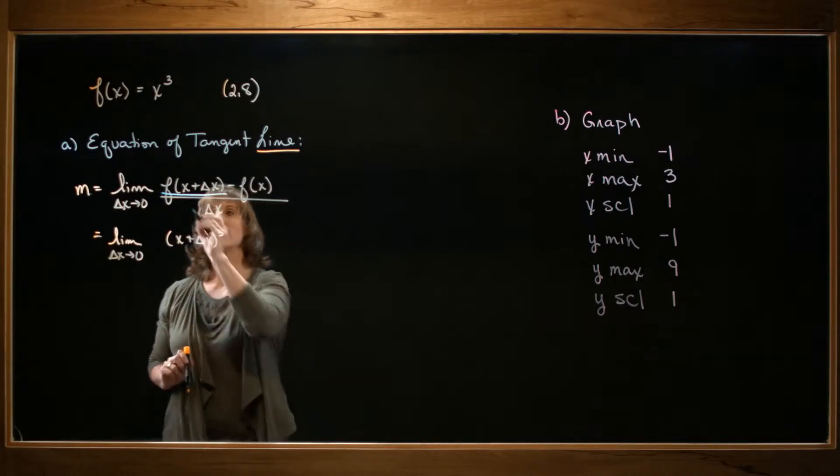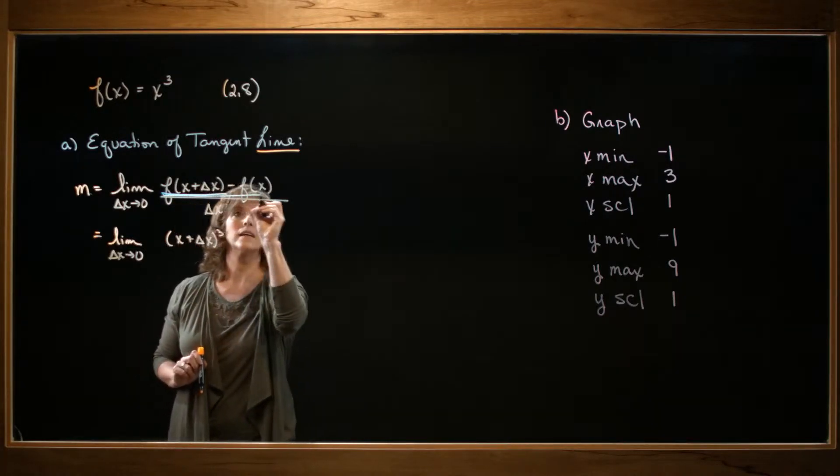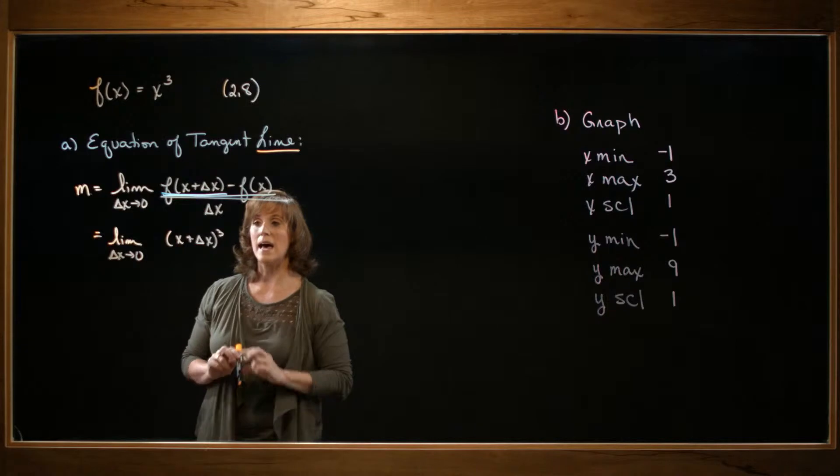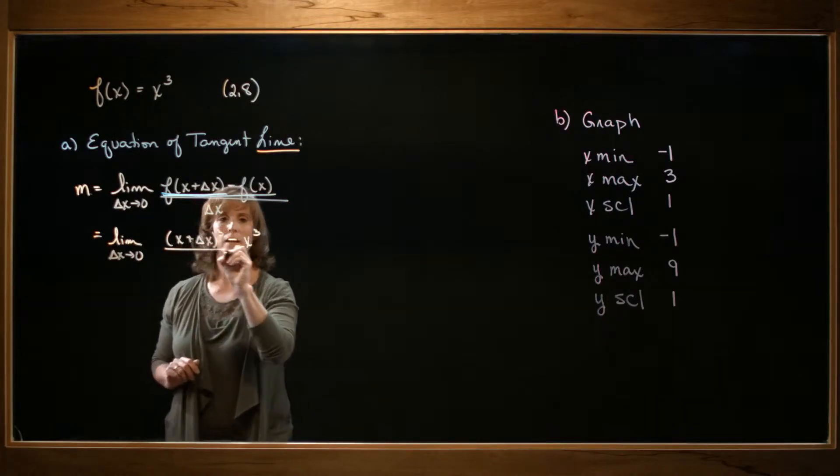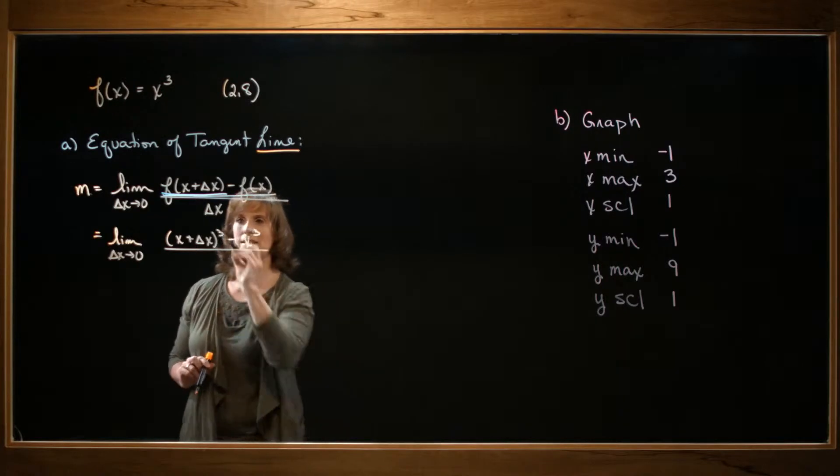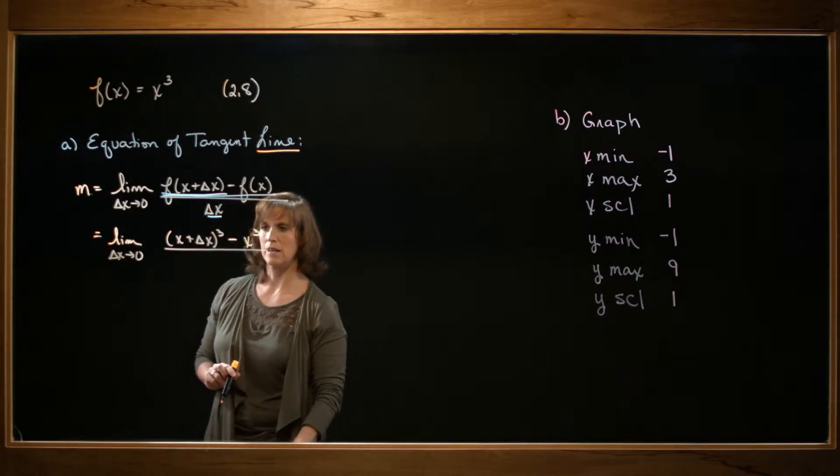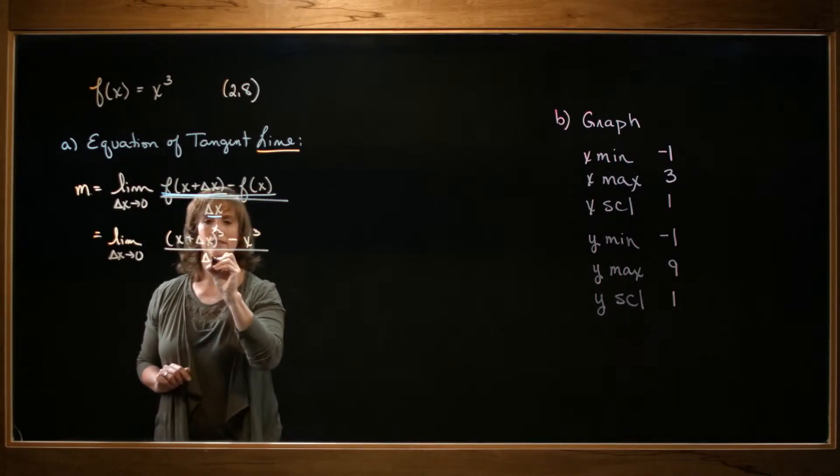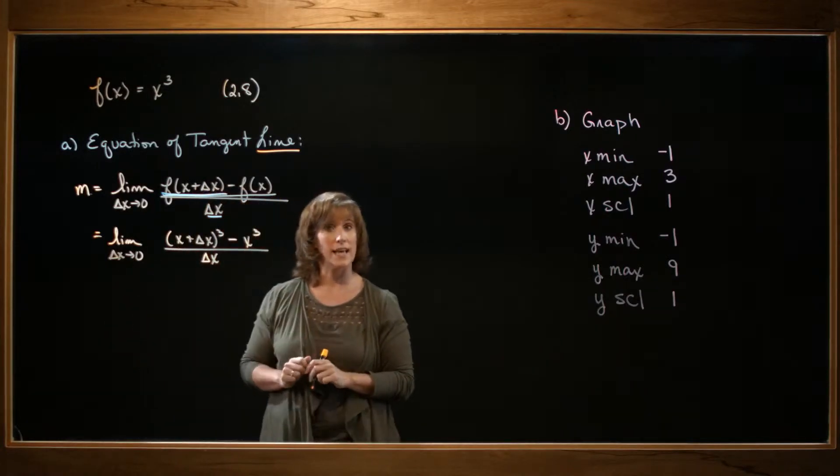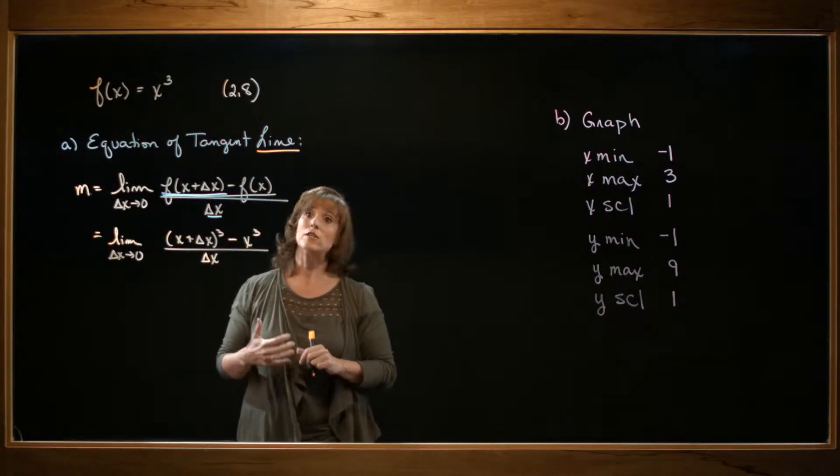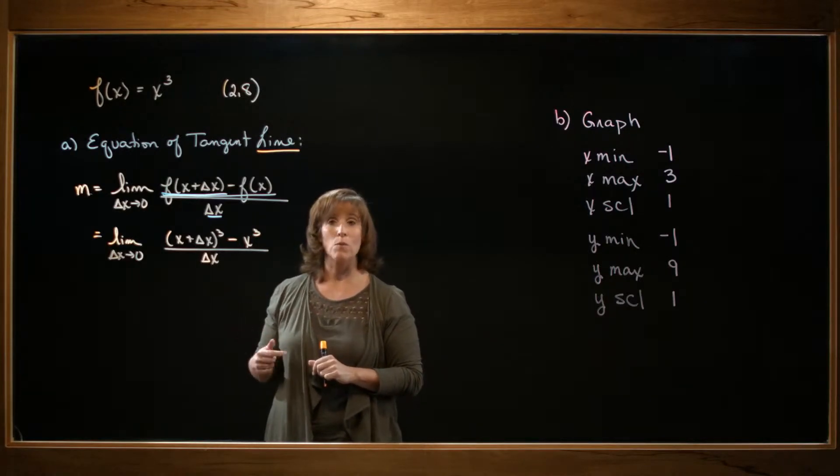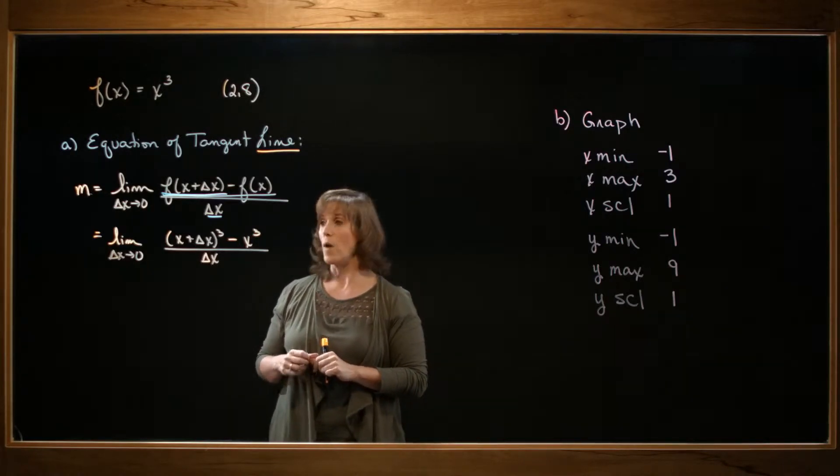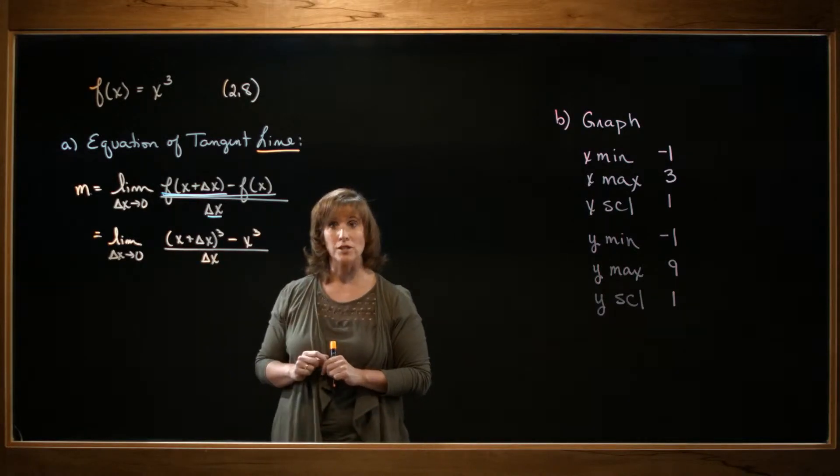The second part is to subtract the f of x. So that means I need to subtract x cubed. The third part says divide by delta x. So divide by delta x. And then the last part is to take that limit. If I try to evaluate the limit at this stage, I'm going to get zero over zero, which is an indeterminate form. So I need to find a way of rewriting that expression.